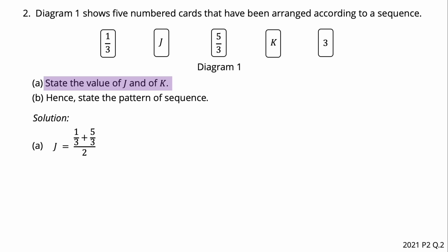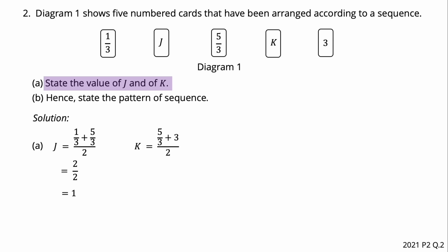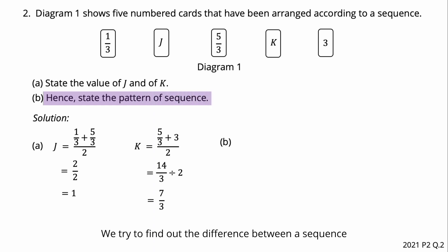j equals (1/3 plus 5/3) divided by 2. The calculated result is j equals 1. For the value of k, k equals (5/3 plus 3) divided by 2. The calculated result is 7/3.